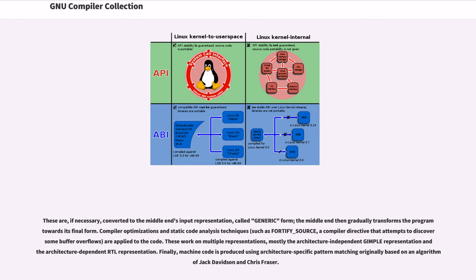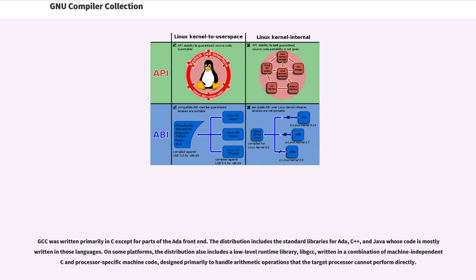These work on multiple representations, mostly the architecture-independent GIMPLE representation and the architecture-dependent RTL representation. Finally, machine code is produced using architecture-specific pattern matching originally based on an algorithm of Jack Davidson and Chris Fraser. GCC was written primarily in C except for parts of the ADA front-end. The distribution includes the standard libraries for ADA, C++, and Java, whose code is mostly written in those languages.